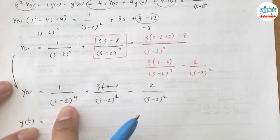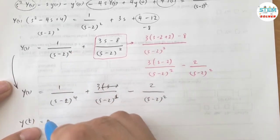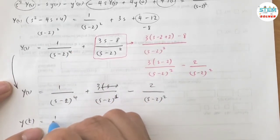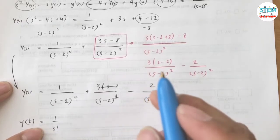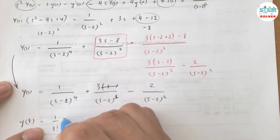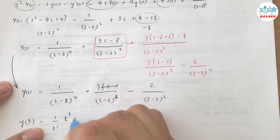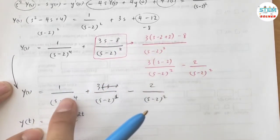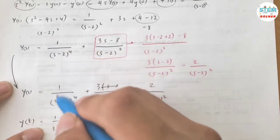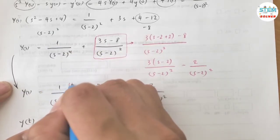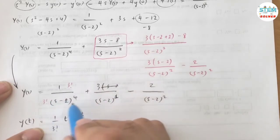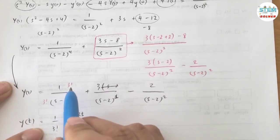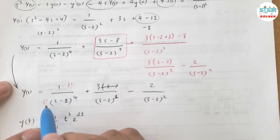So I have Y of T equals, so inverse of this one is going to be 1 over 3 factorial T cubed e to the 2t. So why? Because you have, ignoring the minus 2, you have S to the 4th and the inverse is 3 factorial over this. But initially it doesn't have 3 factorial on top, so when I multiply by 3 factorial on top, I have to multiply by 3 factorial on the bottom. That's why I have 1 over 3 factorial down here.